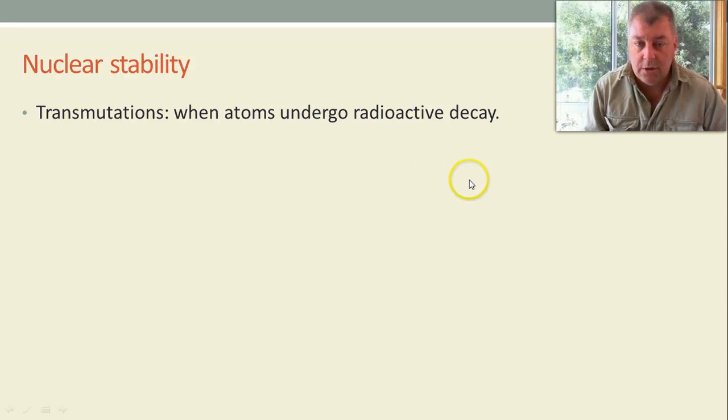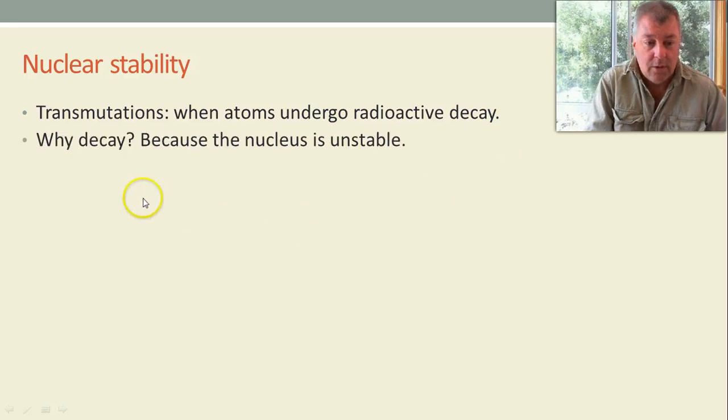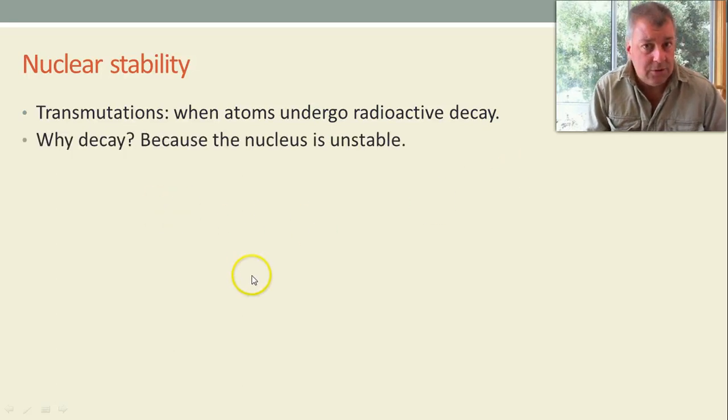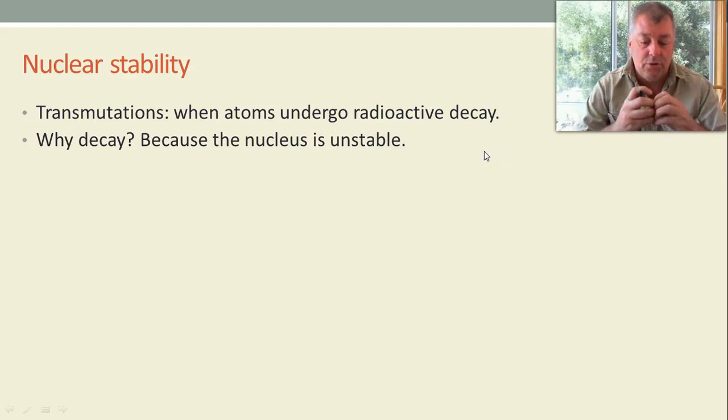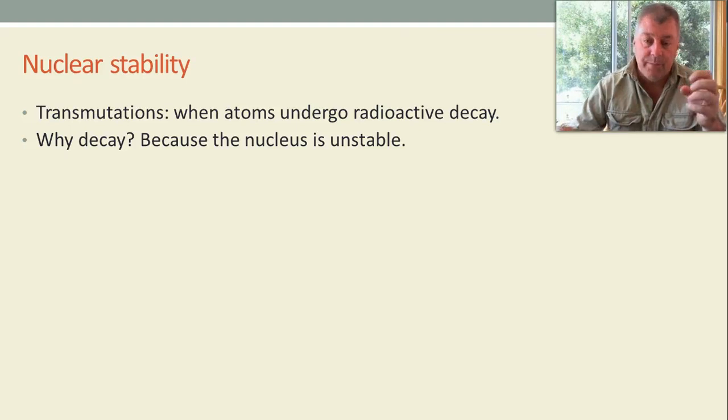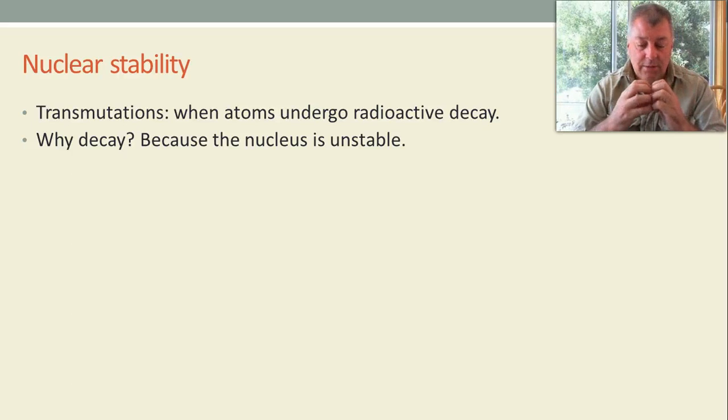What do we mean by nuclear stability? Why do atoms decay is a question you might ask. Well, because the nucleus is unstable. And the nucleus is the protons and neutrons. And all those protons have positive charges. And if you've done electrostatics you would know that like charges or like electrical charges don't like being close to each other. So if you have two positive charges they don't like being close together. And there's a very strong force that flings them apart.